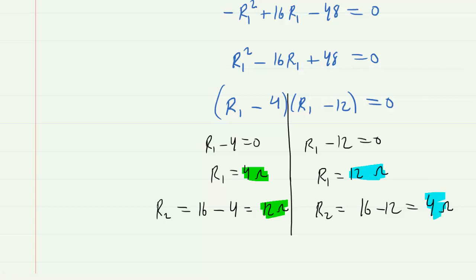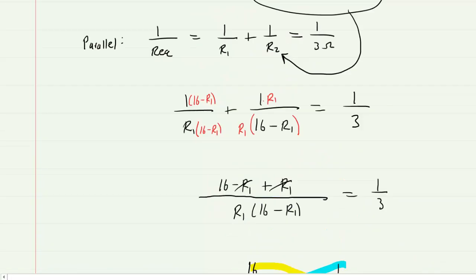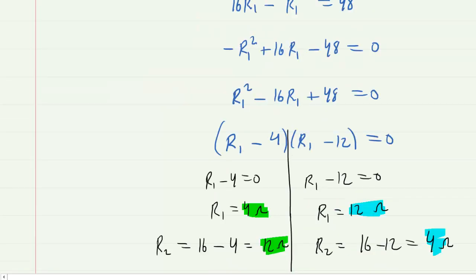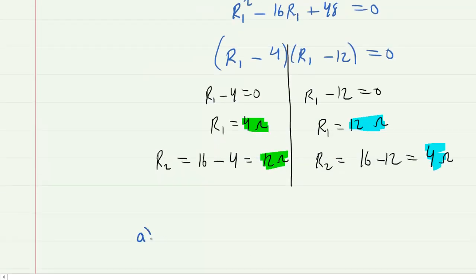The labels are different. But the bottom line is the question wants us to simply report the smaller resistance for part A and then the larger resistance for part B. So for part A the smaller resistance would be the 4 ohms. And then for part B the larger resistance would be 12 ohms. The actual individual labels of R1 and R2 were arbitrary. So all that matters is the smaller value for part A and the larger value for part B.